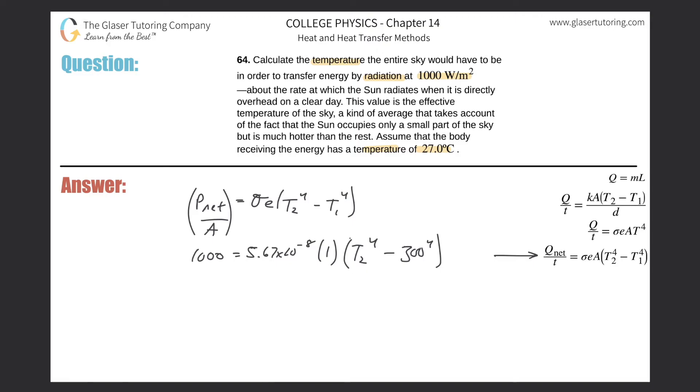So why don't we divide this term over to the left-hand side. We'll take 1000 divided by 5.67 times 10 to the minus 8. We have a value of approximately 1.76 times 10 to the 10th.